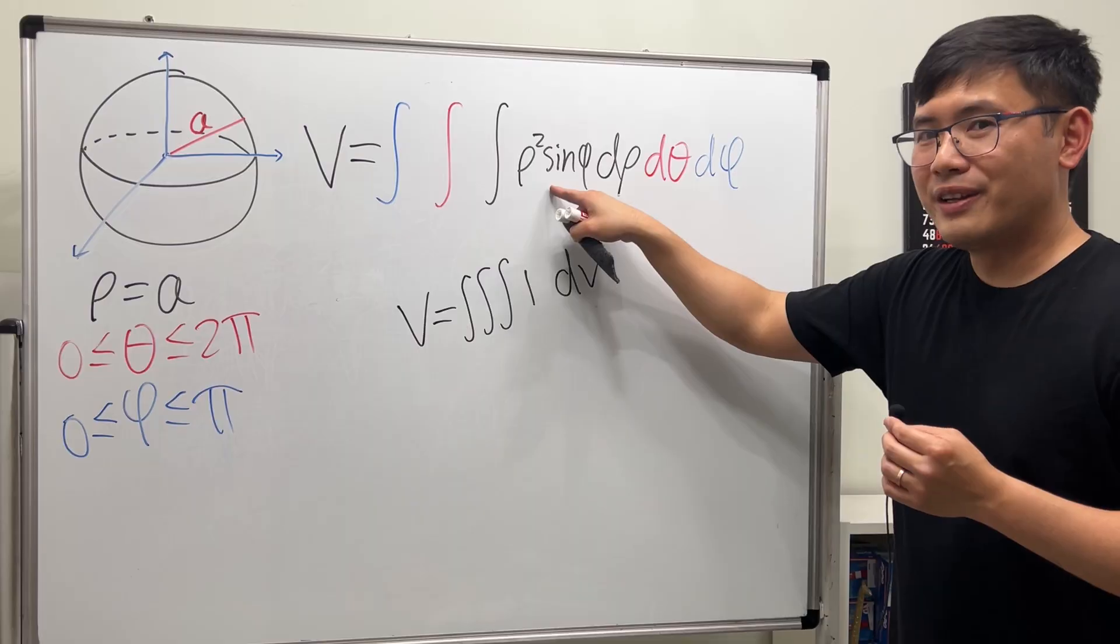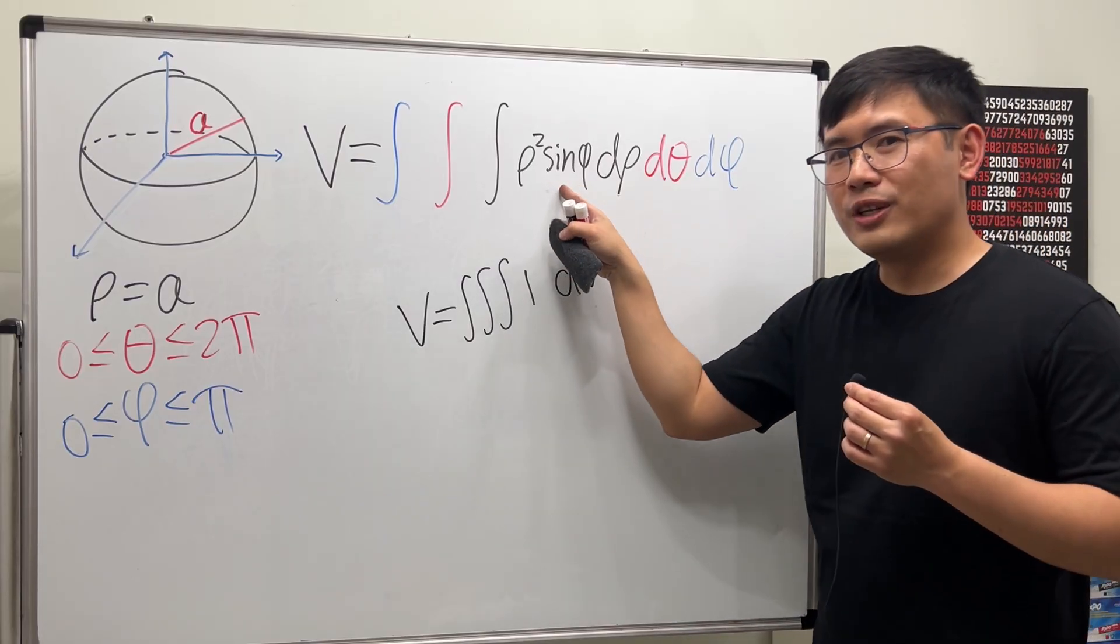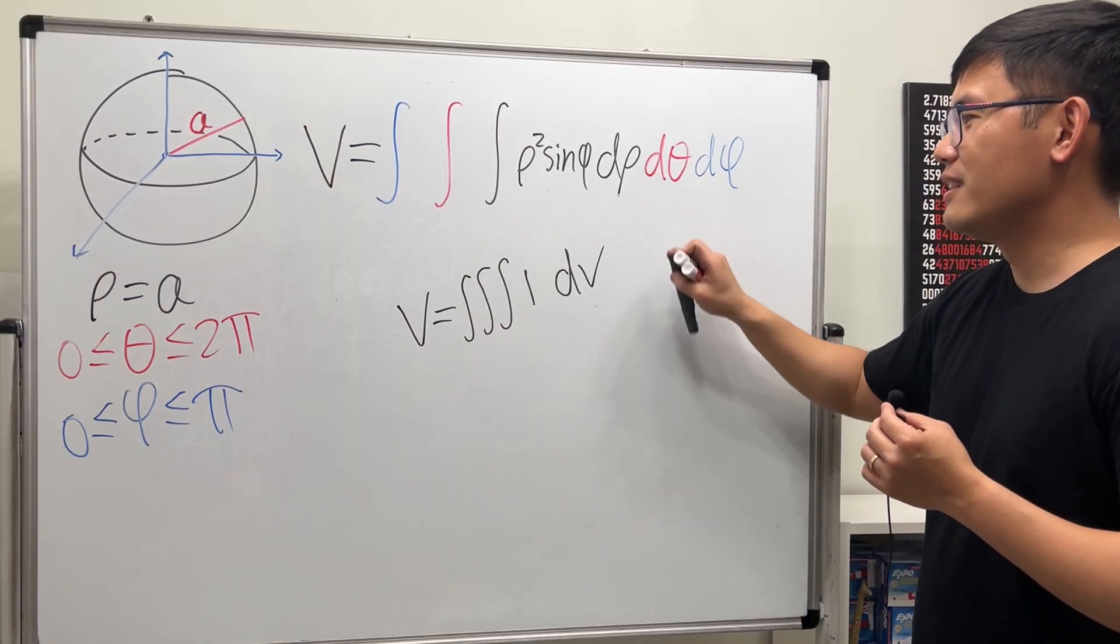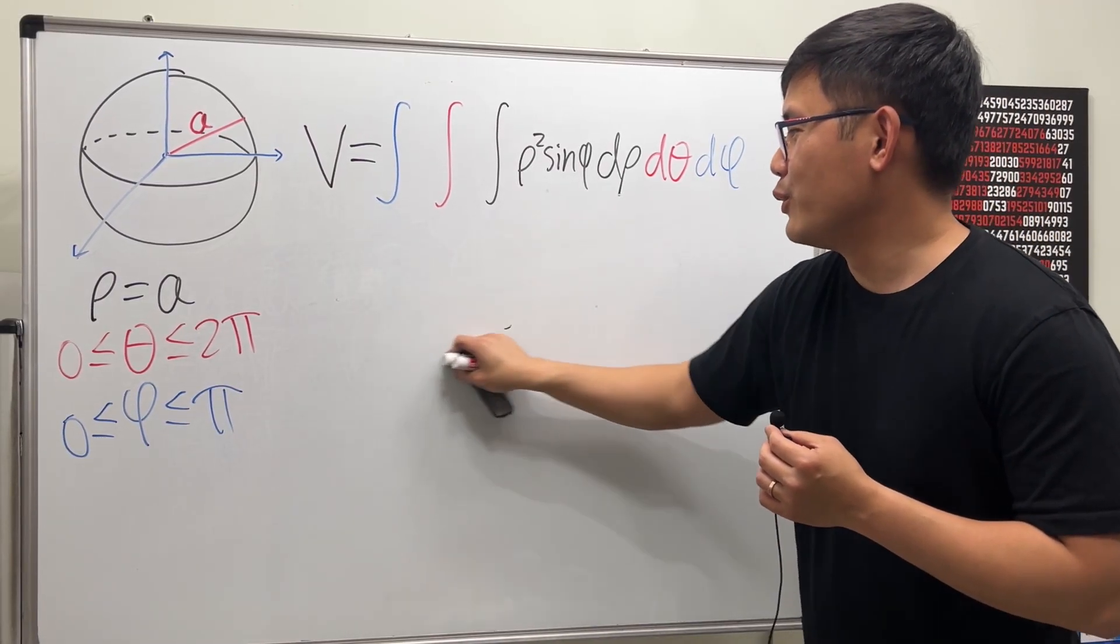So this right here, make sure you remember. You can do the Jacobian, or you can do geometry. Okay, I will have the link to those videos in the descriptions, so you guys can review it.